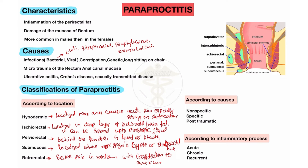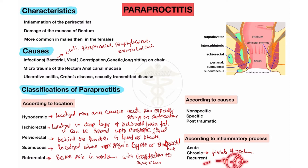According to inflammatory process, Paraproctitis may be acute type, chronic — when acute type is not treated for a long time it becomes chronic — and also in the case of fistula formation. When chronic type occurs, fistula of the rectum develops. Recurrent type occurs when Paraproctitis is treated but comes back repeatedly. So according to inflammatory process: acute, chronic, and recurrent types.